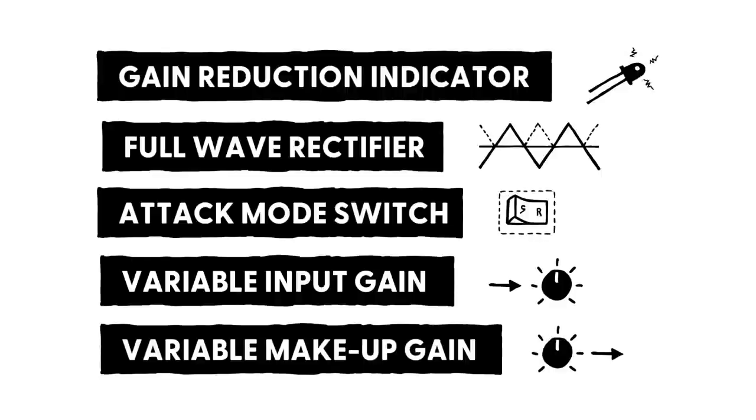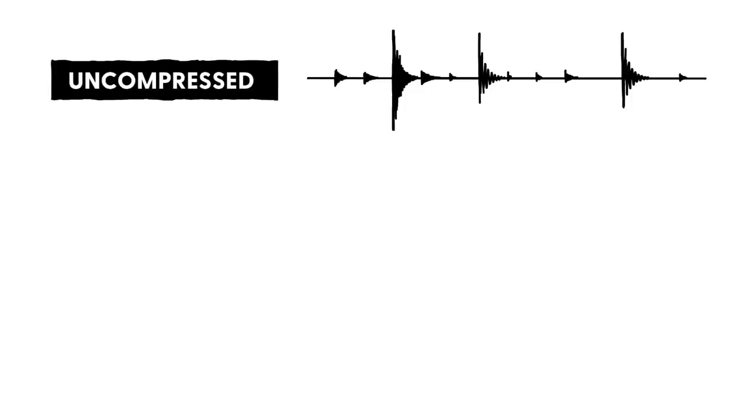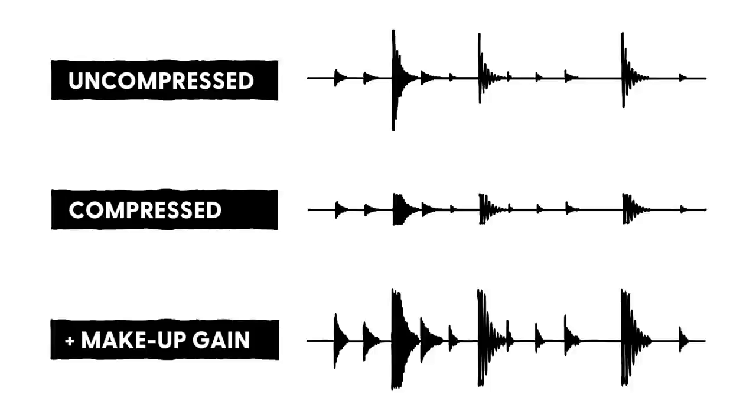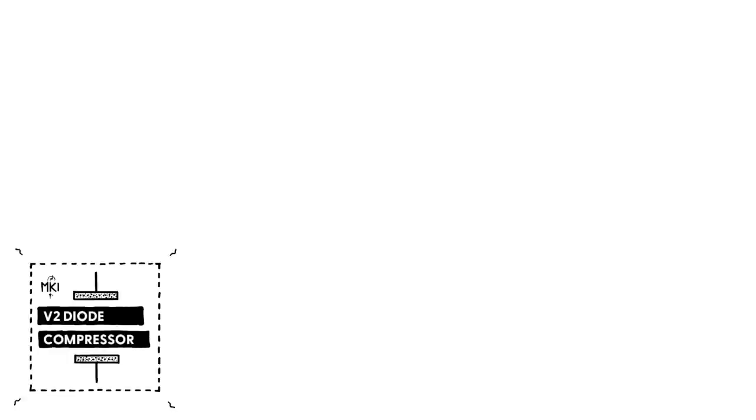There's only one more feature to implement, the make-up gain stage. What's it for? Simple. If you compress a signal, you turn the loud parts down to reduce its dynamic range. Because of this, the overall output volume is going to be lower. To compensate, most compressors include a make-up gain stage, which allows you to push the overall output volume back up. Implementing this is pretty straightforward. We just set up a non-inverting amplifier with variable gain and connect it to the compressor's output. Combining a 100k potentiometer with a 20k resistor to ground in the op-amp's feedback path gives us a gain range of 1 to 6, which should be plenty.